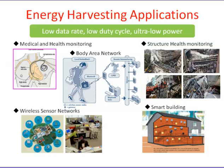Hospitals can monitor patients' vital statistics and vital signs using sensors that adhere to the skin and run off body heat. These sensors can measure temperature, blood pressure, heart rate, and blood oxygen levels, and transmit those wirelessly to a central station — for example, an EICU (Electronic Intensive Care Unit).